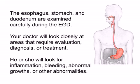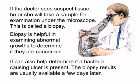The esophagus, stomach, and duodenum are examined carefully during the EGD. Your doctor will look closely at areas that require evaluation, diagnosis, or treatment. He or she will look for inflammation, bleeding, abnormal growths, or other abnormalities. If the doctor sees suspect tissue, he or she will take a sample for examination under the microscope. This is called a biopsy. Biopsy is helpful in examining abnormal growths to determine if they are cancerous and can also help determine if a bacteria-causing ulcer is present. The biopsy results are usually available a few days later.